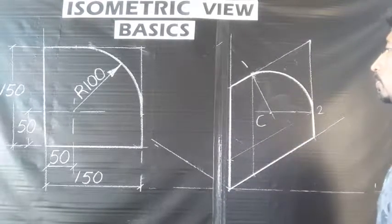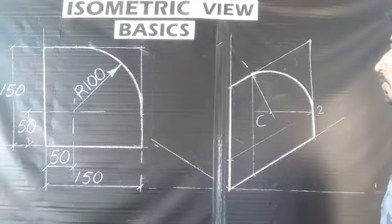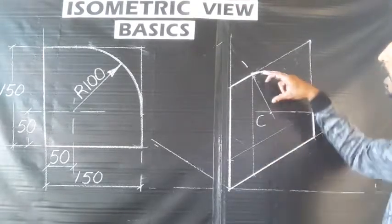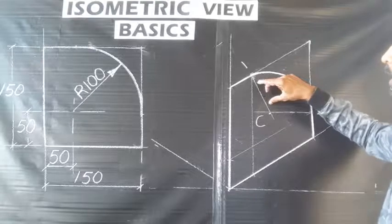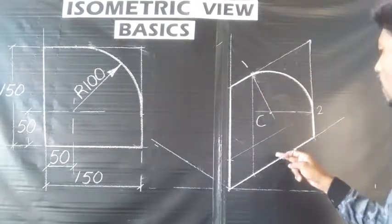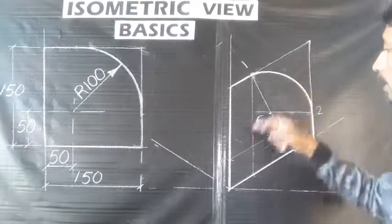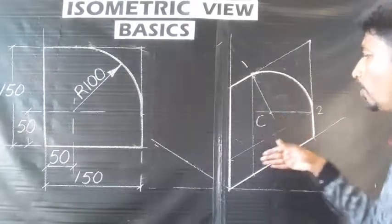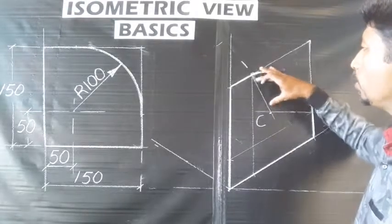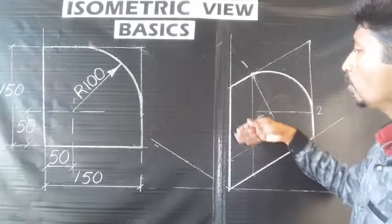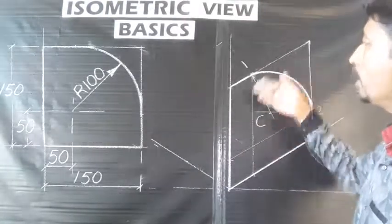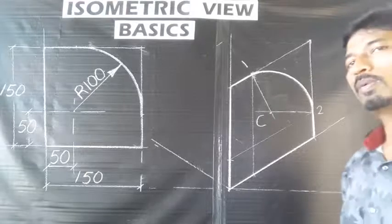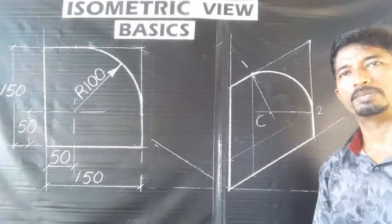So this is our final panel view. If you follow this method, you can create the isometric view. You can see the arc here. The original radius is shown in orange. The arc follows the same steps, and from the arc to the radius, you can see it clearly in the isometric view. I'll see you in the next video.